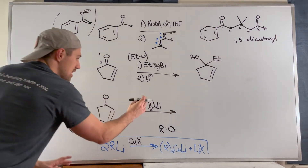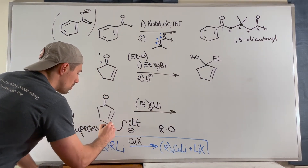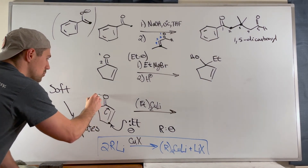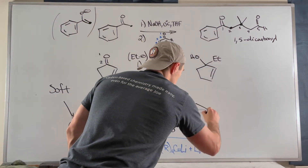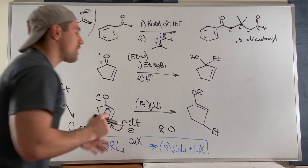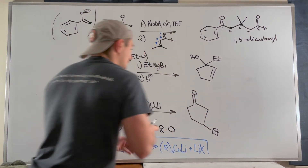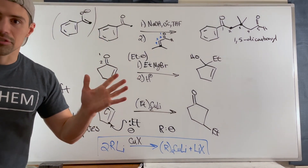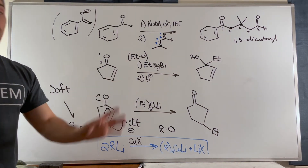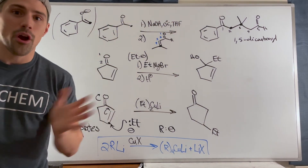When you see R₂CuLi, think of it as R⁻ — just a less aggressive carbanion. You do a 1,4-addition as normal, attacking at the fourth carbon. Bounce the electrons up, swing them onto the oxygen — initially you get an enolate-type intermediate with the new substituent on the fourth carbon, then it flips back to its carbonyl form. This would be a 1,4-addition but not a Michael addition, since Michael addition specifically requires an enolate as the nucleophile.